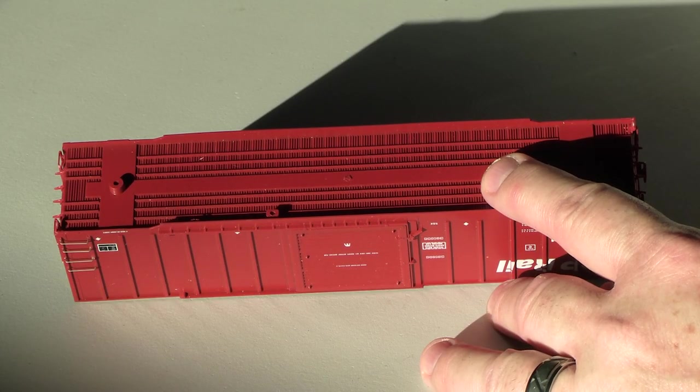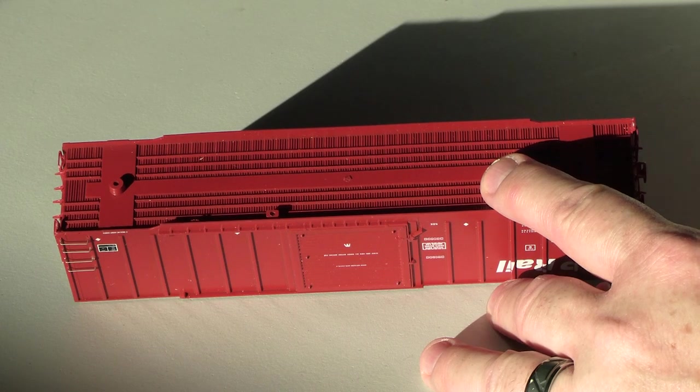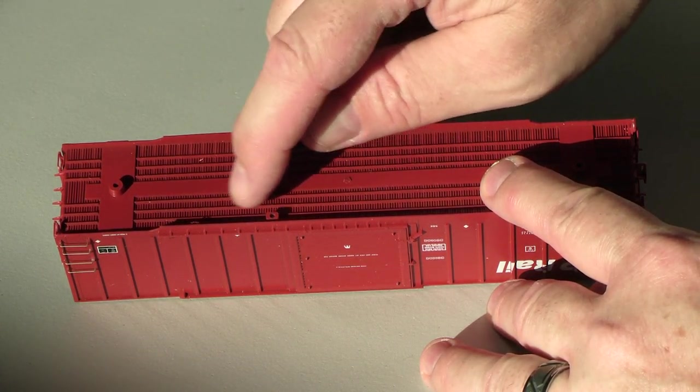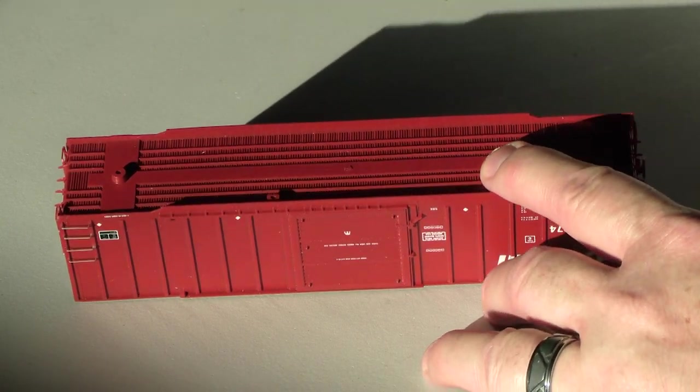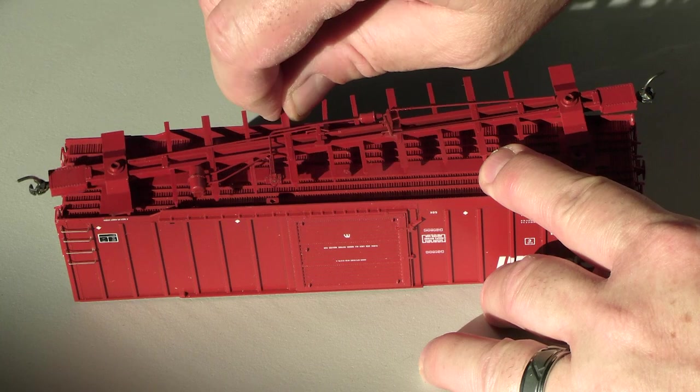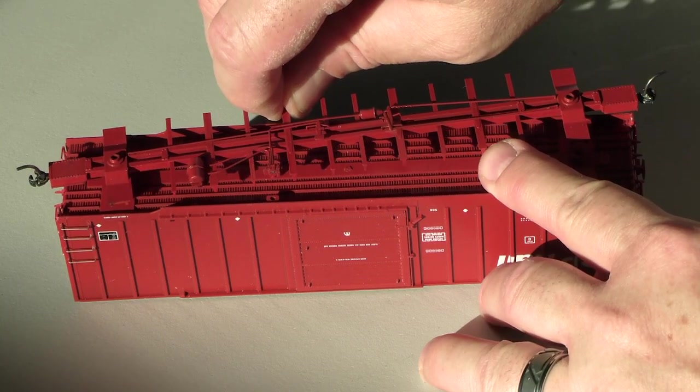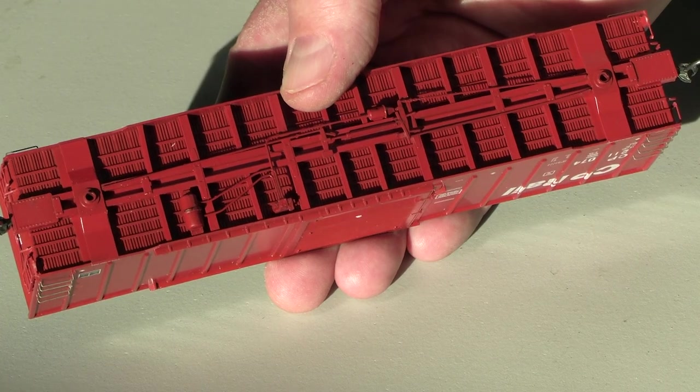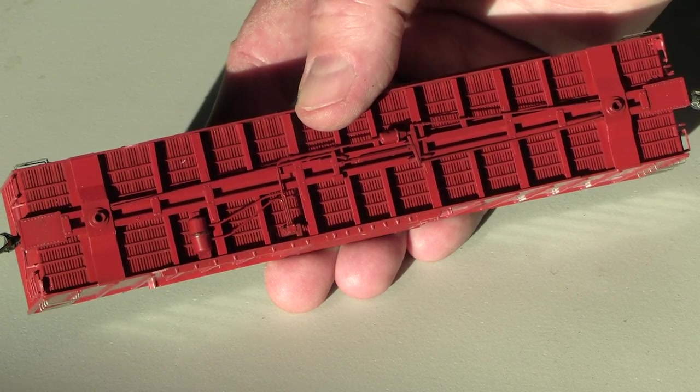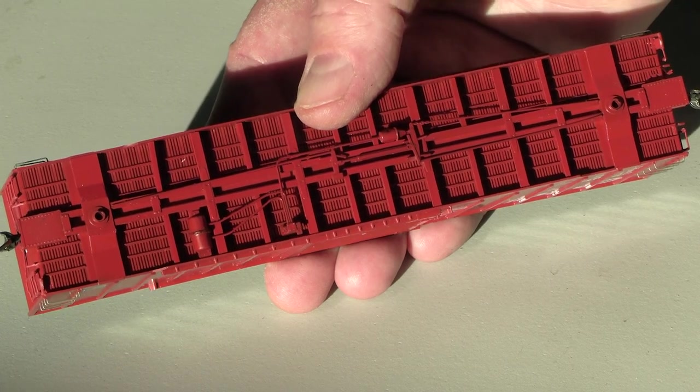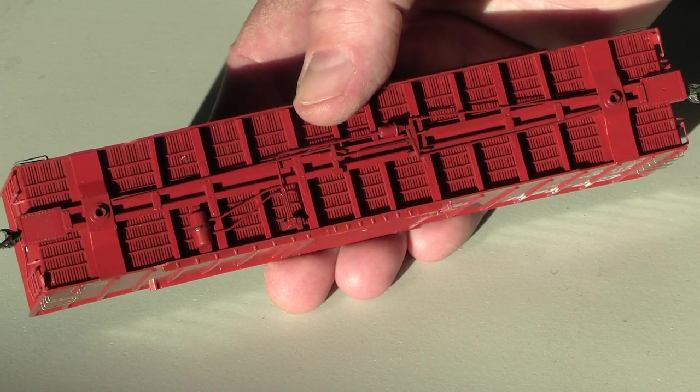Now it's time to put the entire underframe assembly on the car. There are two little supports under here with holes in them, and those correspond to the position of the triple valve and the air reservoir. I managed to get everything in there. Now you could glue the underframe or you could leave it removable. I think I'm going to leave mine removable and see how that goes, just in case I ever have to change the couplers for some reason.